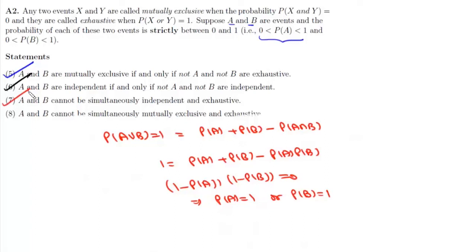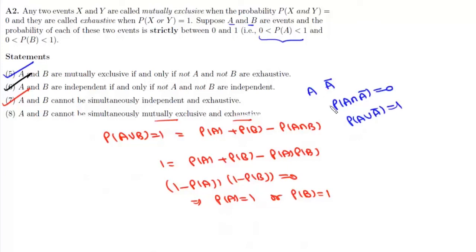Statement 8: A and B cannot be simultaneously mutually exclusive and exhaustive. This is not true. For complementary events A and A⁰, we know P(A ∩ A⁰) = 0 and P(A ∪ A⁰) = 1, so this condition is always satisfied. Two events A and B can be mutually exclusive as well as exhaustive. For example, tossing a coin: if A is getting a head and B is getting a tail, both events are mutually exclusive and exhaustive. So statement 8 is incorrect.